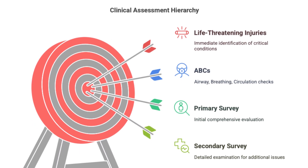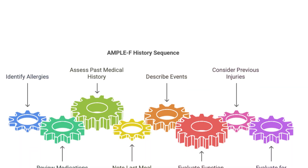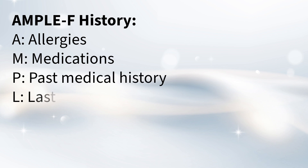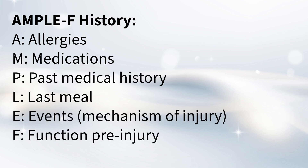Once those are taken care of, we move on to getting a really thorough history — understanding the background of the injury. Mnemonics can be helpful here. There's the AMPLE history: it stands for allergies, medications, past medical history, last meal, events leading to the injury, and the patient's pre-injury functional status. That's crucial because it can give you clues about underlying conditions that might have contributed — like if someone had a pathologic fracture that happened with barely any force, maybe there's something else going on.